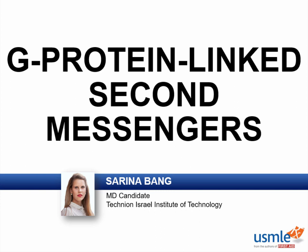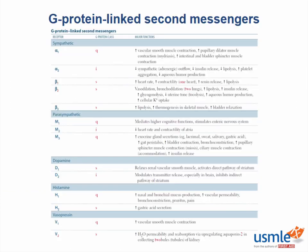Gi protein linked second messengers. The table of second messengers is probably one of the most intimidating charts in this entire book. But do not worry, we will incorporate this information as we move through the chapter. This is a better way to learn this crazy chart than trying to memorize it. So for now, what I want you to take from this chart is just a few high-yield points.